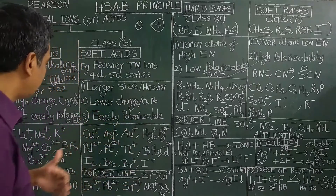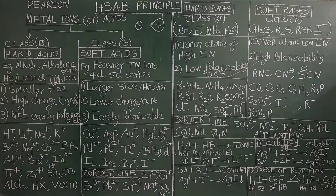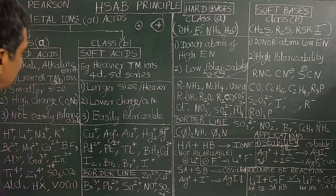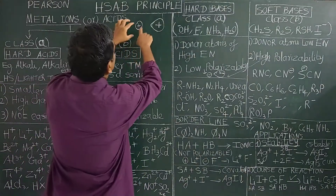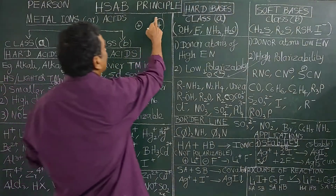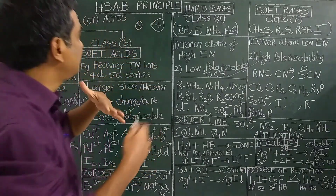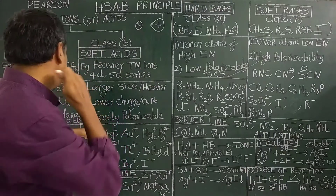Soft acids, on the contrary, are of larger size — they are heavier metal ions. They possess lower charge and lower oxidation number. For example, Cu+, Ag+, Au+, Tl+. Hard acids are not easily polarizable — their electron cloud is rigid and not distorted. Whereas soft acids are easily polarizable; their electron cloud is easily distorted in the presence of an anion.